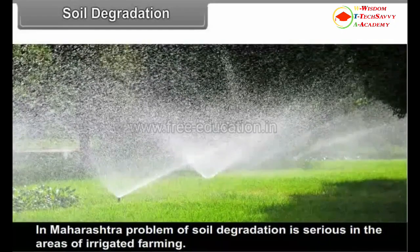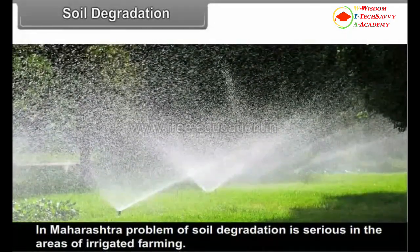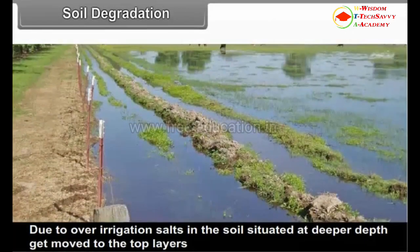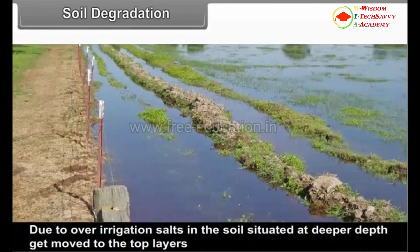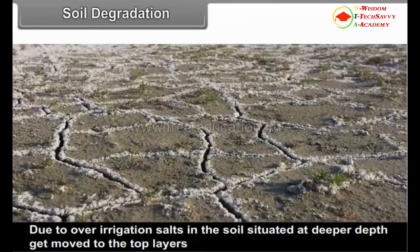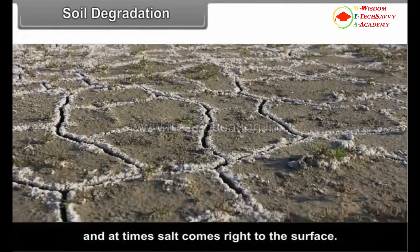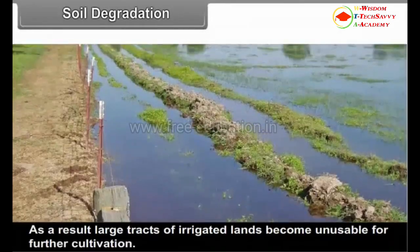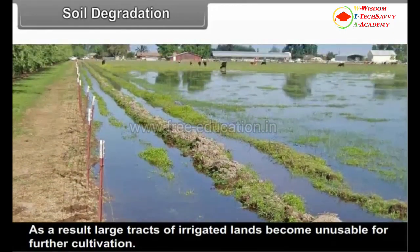In Maharashtra, the problem of soil degradation is serious in areas of irrigated farming. Due to over-irrigation, salts in the soil situated at deeper depths get moved to the top layers, and at times salt comes right to the surface. As a result, large tracts of irrigated lands become unusable for further cultivation.